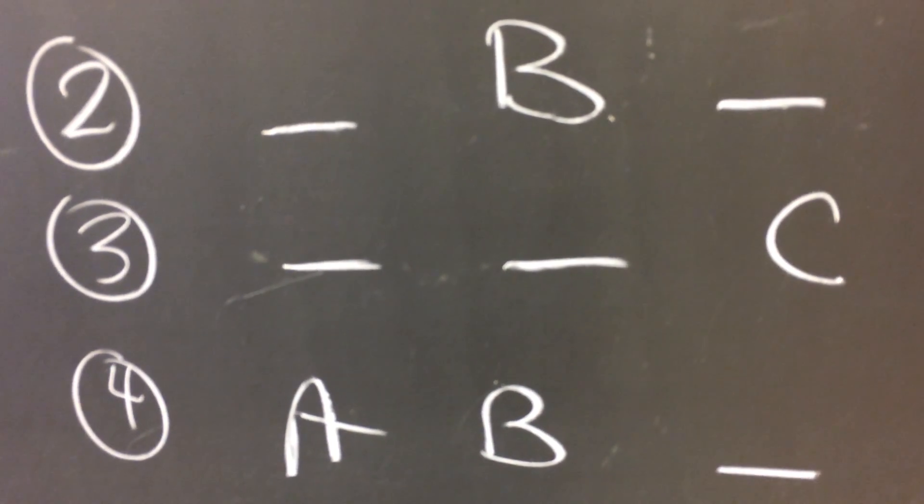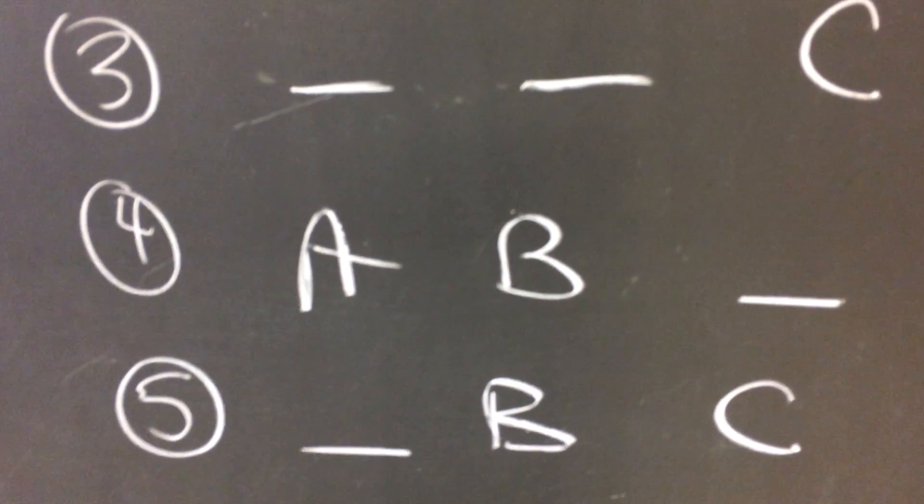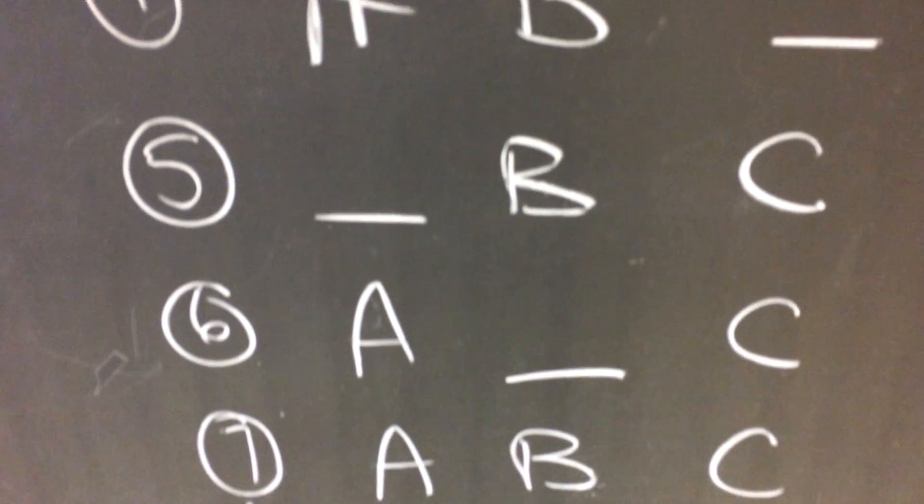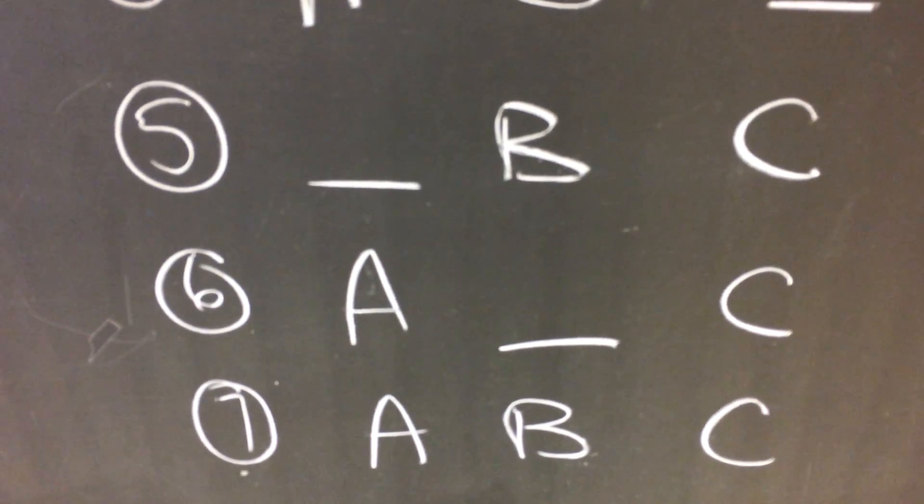I could choose A and B and leave off C, B, C, leave off A, A and C, leaving off B, or the seventh one is choosing all three of them, A, B, C.